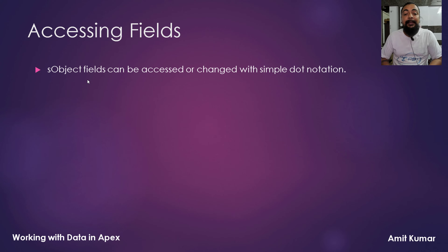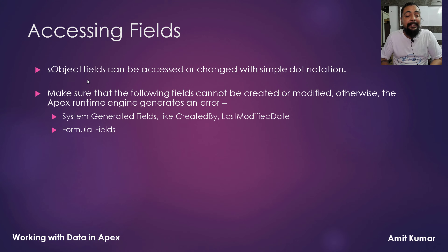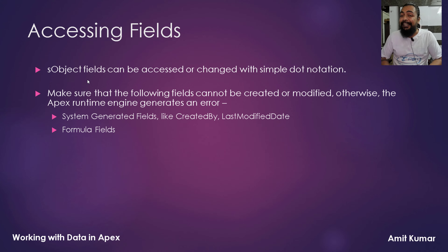SObject fields can be accessed or changed with simple dot notation. If we have any specific Salesforce object, we can access any field of that object using dot notation. However, some fields cannot be modified — otherwise we can get Apex runtime errors or exceptions. These are system-generated fields like Created By, Last Modified Date, Created Date, and formula fields. The values for these fields are automatically generated; we cannot insert or modify them.